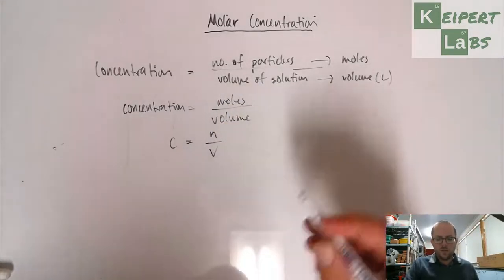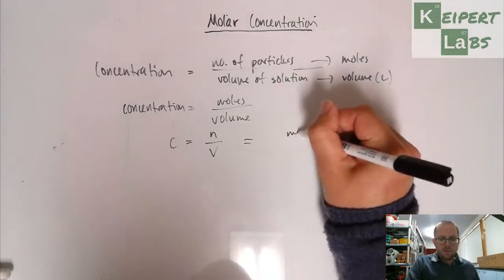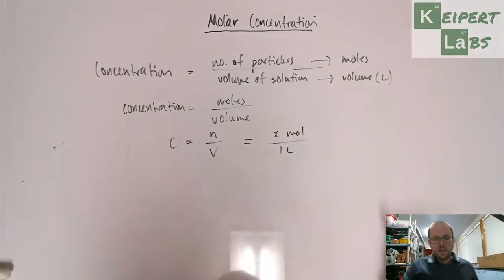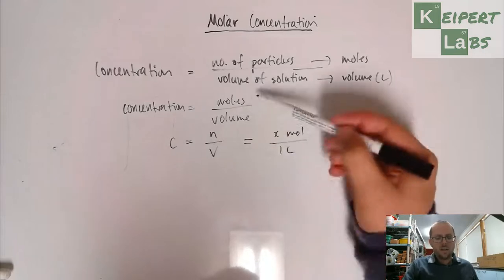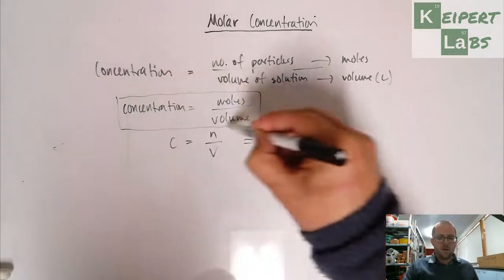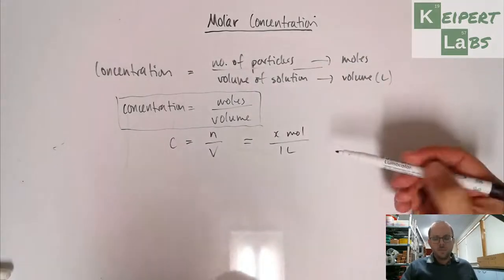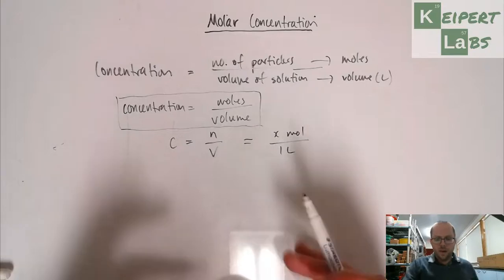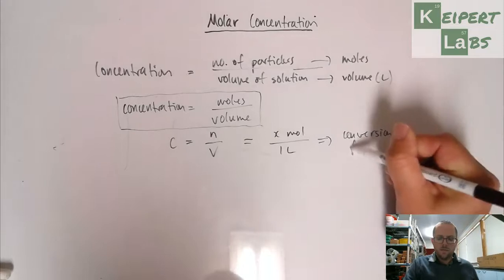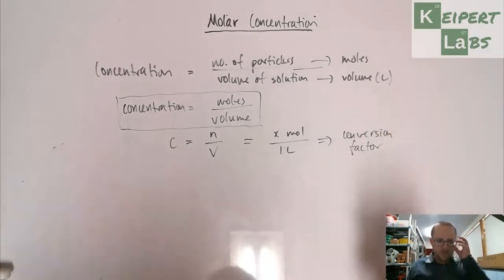And so what we can do is that we can express this as a set number of moles, x number of moles for every one liter of solution. Now the reason for that is I can calculate a concentration by using the number of moles I have divided by the volume that I have, but now I can use a standard unit of volume as a conversion factor to be able to convert between moles, concentration, and volume in liters.